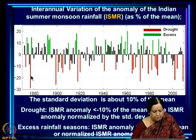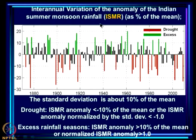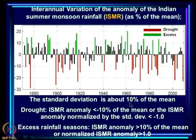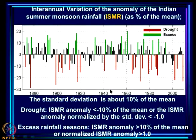This figure shows how the ISMR has varied from 1876 to now. The mean is about 85.4 cm and the standard deviation is about 10 percent of the mean. We define a drought as a season in which the ISMR anomaly is negative and its magnitude is larger than 10 percent. When the ISMR anomaly is positive and larger than 10 percent, we call it an excess monsoon year. It can also be defined by the anomaly normalized by the standard deviation: less than minus 1 for droughts and greater than 1 for excess.